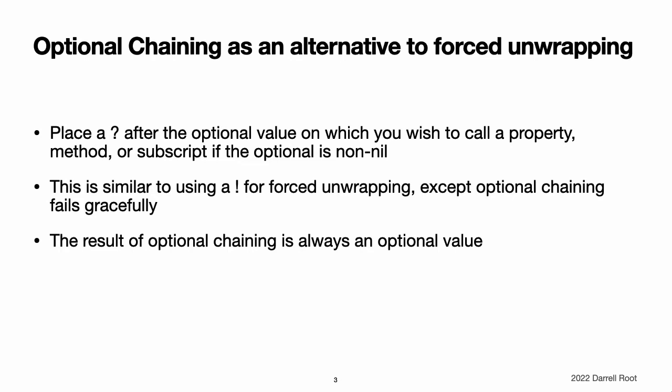Optional chaining as an alternative to forced unwrapping. You specify optional chaining by placing a question mark after the optional value on which you wish to call a property, method, or subscript if the optional is non-nil. This is very similar to placing an exclamation point after an optional value to force the unwrapping of the value. The main difference is that optional chaining fails gracefully when the optional is nil, whereas forced unwrapping triggers a runtime error when the optional is nil. The result of an optional chaining call is always an optional value, even if the property,